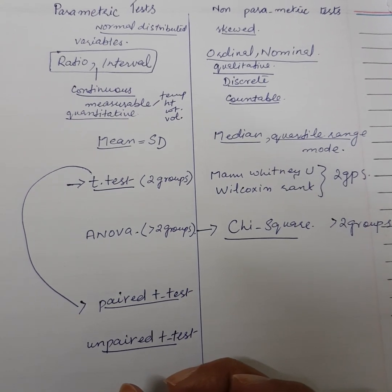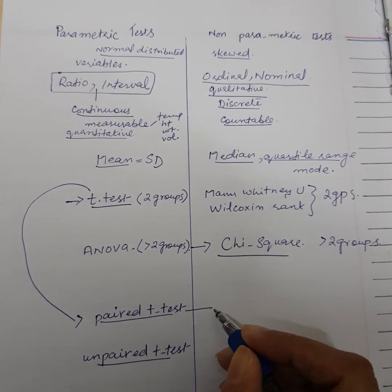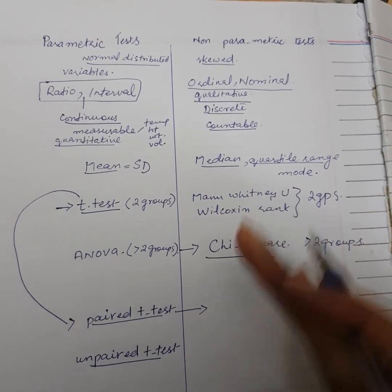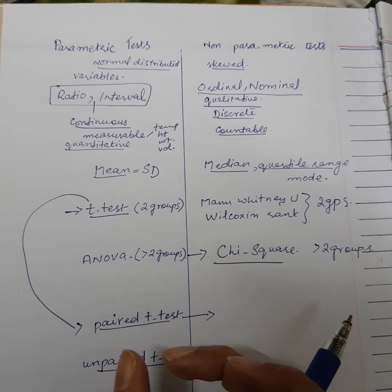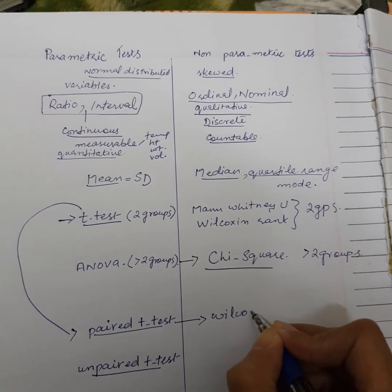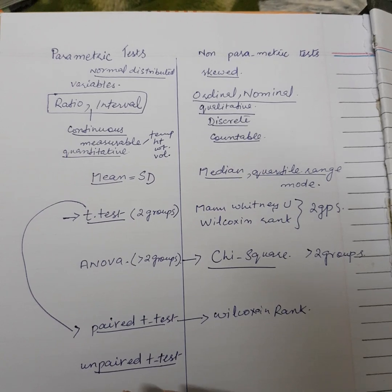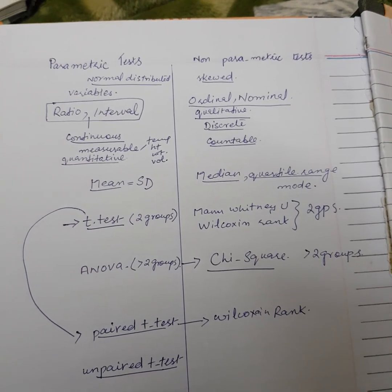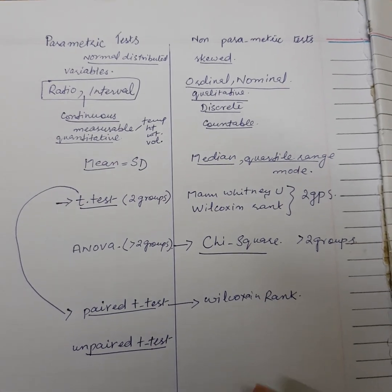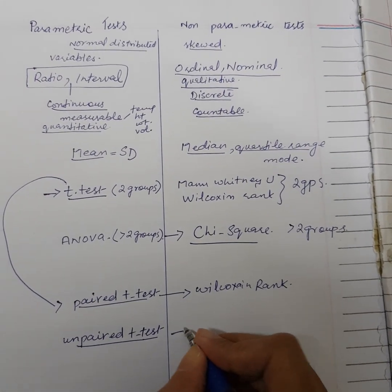When both groups are different and independent, we use the Unpaired T-test. For a non-parametric paired group, the corresponding non-parametric test is the Wilcoxon Rank test. When both groups are unpaired — the data in both groups is different, their medians are compared, and the distribution is skewed — we use the non-parametric Mann-Whitney U-test.